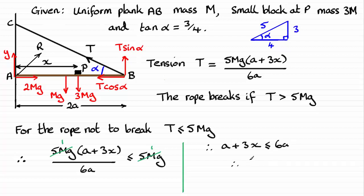Subtract a from both sides, just leaving me with 3x, I should say, is less than or equal to 5a. And dividing both sides by 3 now, leaves me with x is less than or equal to 5a over 3.